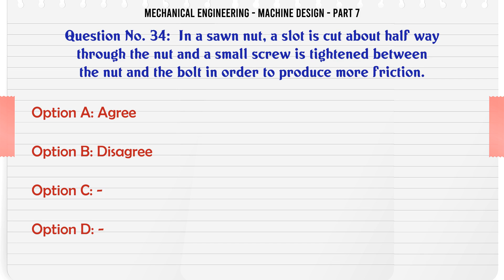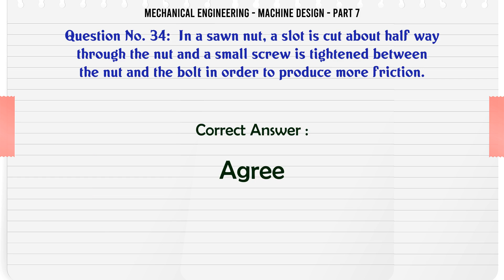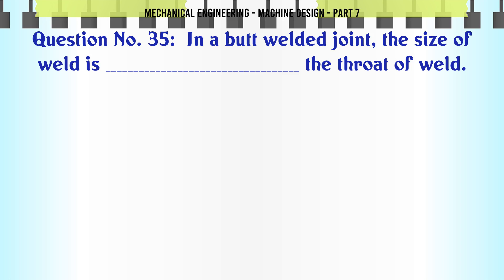In a sawn nut, a slot is cut about halfway through the nut and a small screw is tightened between the nut and the bolt in order to produce more friction. a) Agree, b) Disagree. The correct answer is: Agree.